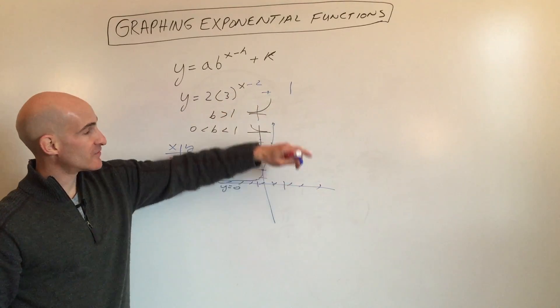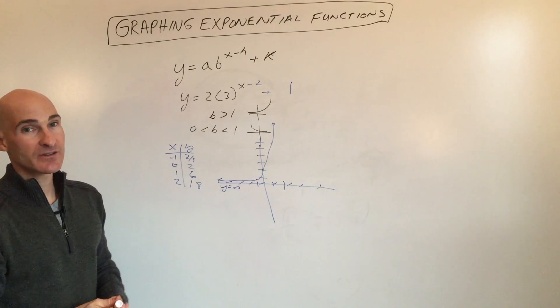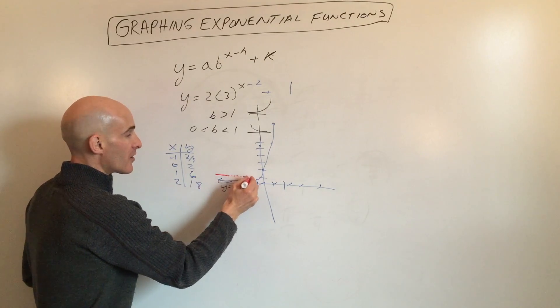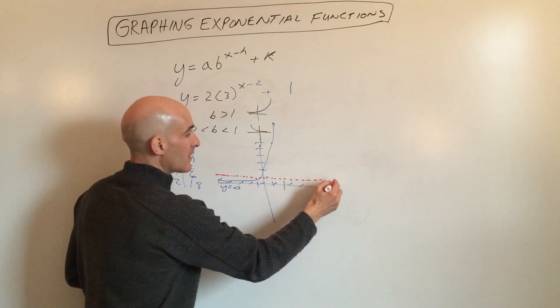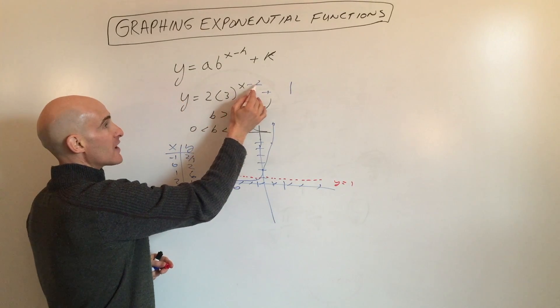The plus 1 shifts the graph up 1, which means the asymptote also shifts up 1. We're going to draw our asymptote at y equals 1. Every point is going to shift right 2 and up 1.